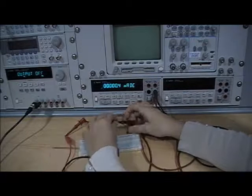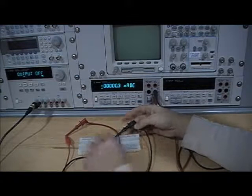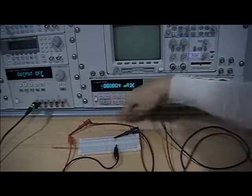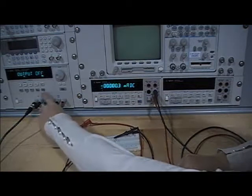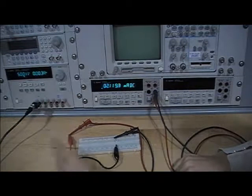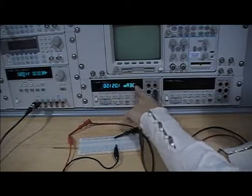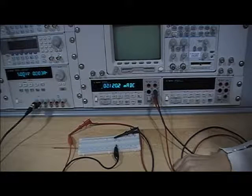Connect the positive of the power supply to the positive lead of your ammeter, and connect the negative lead of your ammeter to one side of the resistor closing the circuit. Now you're ready to turn on the power of the power supply. Select output on, and now you'll see that the current meter is measuring roughly 2.1 milliamps.